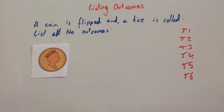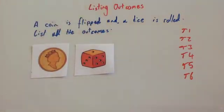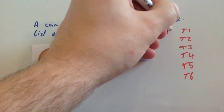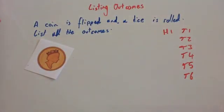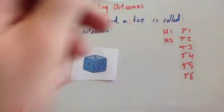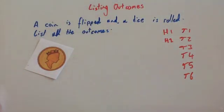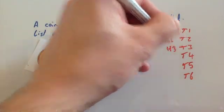However, we may have got a head instead of a tail. So we could get a head and a one. So head one, H1. We could get a head and a two. Head two. We could get a head and a three. Head three.